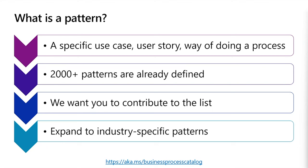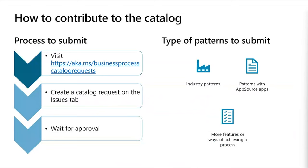We'd like you to help contribute industry-specific patterns or ISV-specific patterns. The process for submitting to the catalog is simple — broken down into three basic steps. Visit aka.ms/business-process-catalog-requests, then create a catalog request on the issues tab. Once you've created that GitHub issue, it will go through an approval process at Microsoft with Power Automate flows. You'll receive notification, or the owner of the area might reach out if they have additional questions, and we'll let you know if it's been approved and when the new item would be published.